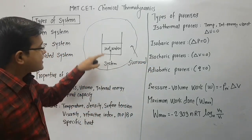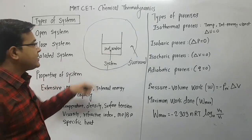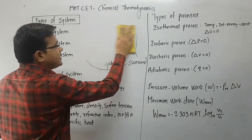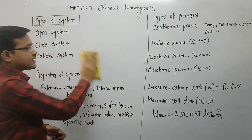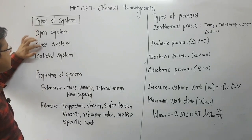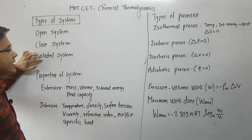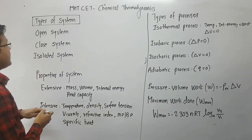The first type of system is open system, the second is closed system, and the third is isolated system.